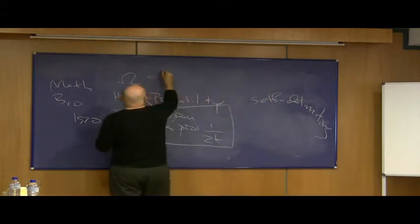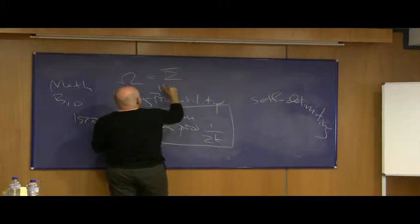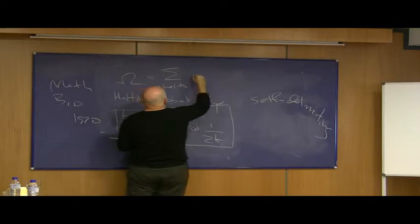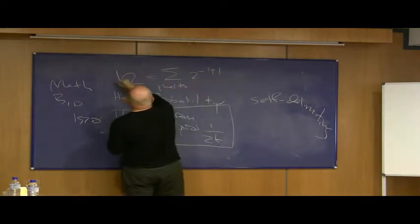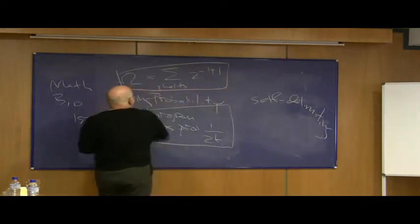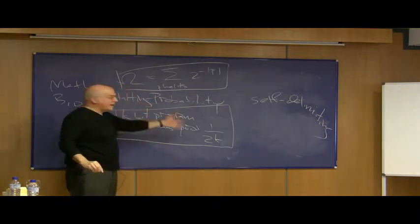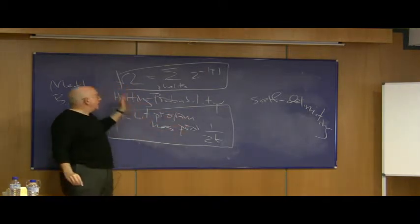So then you can ask, what is the total probability of all the programs that halt? p halts, and that would be two to the minus the size in bits of the program p. This is just the probability that a program that's chosen at random by independent tosses of a fair coin will eventually halt.